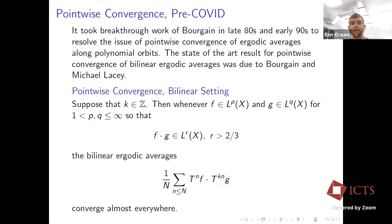Now I'm going to switch gears and talk about the pointwise setting. Up until COVID, the state of the art for pointwise convergence results for bilinear averages was due to Bourgain and later strengthened by Michael Lacey. The statement is rather surprising: suppose I take some integer K that is not zero and not one. Then whenever F and G are just slightly better than integrable — their product is not in L^{2/3} but slightly better than L^{2/3}, so think of F and G as being in L^{4/3} — the bilinear ergodic averages converge almost everywhere.